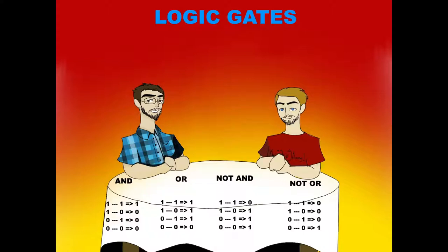We also touched on how we can apply the principles of binary to our lives and when they are and aren't appropriate. This episode we're going deeper into binary, more into the actual physical mechanical workings inside a computer — what actually happens when you send it a zero or a one. The basic idea is that a one is on and a zero is off, which translates to a voltage or no voltage being sent into the computer. If there's a one, it sends a little pulse of electricity; if there's a zero, it doesn't.